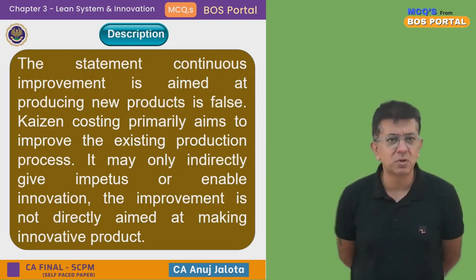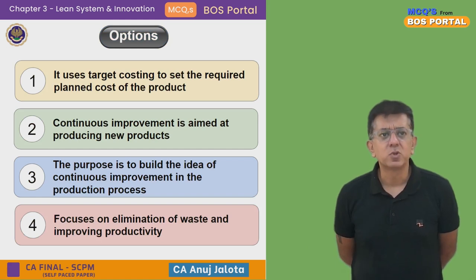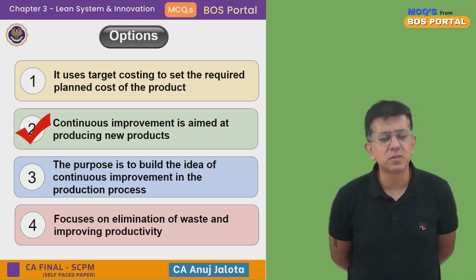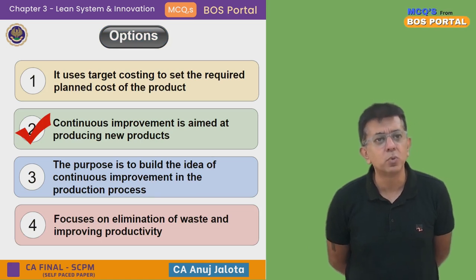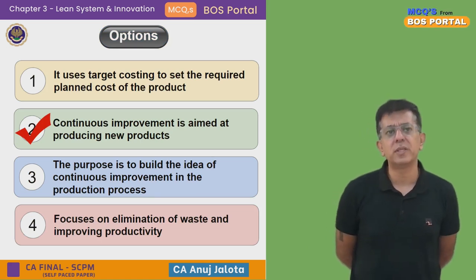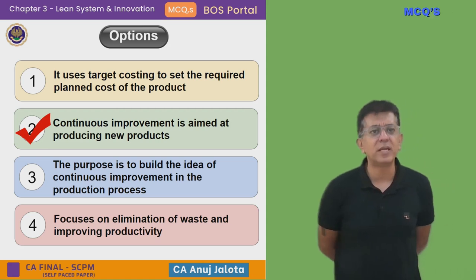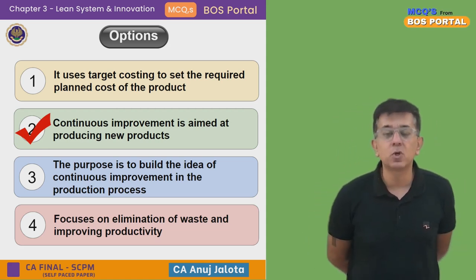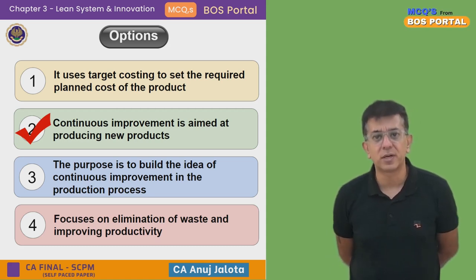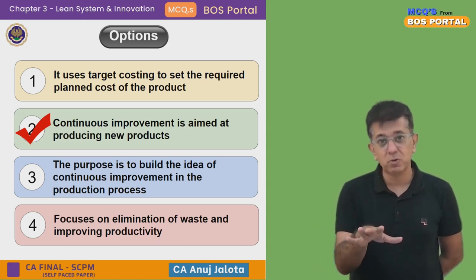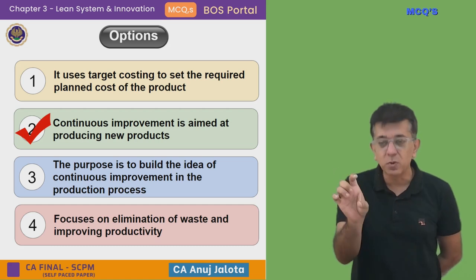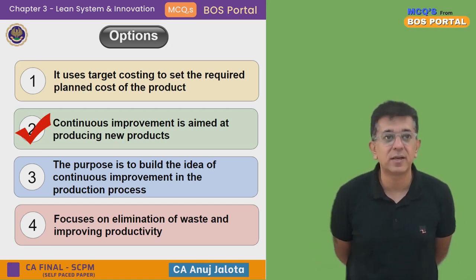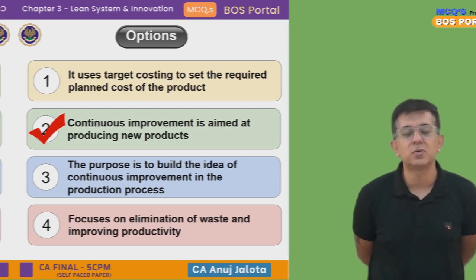So which one of them is not true? It should be Point 2. The correct answer is B — 'continuous improvement is aimed at producing new products' is FALSE. Kaizen Costing is not about producing new products; it's about the same products we produce, streamlining the process, reducing waste, and achieving the desired cost reduction target. That's your answer to this question.